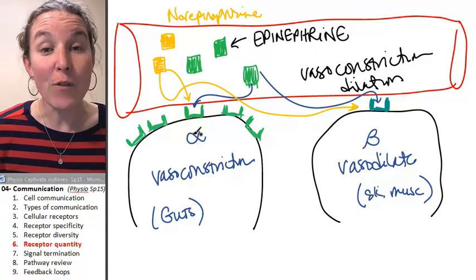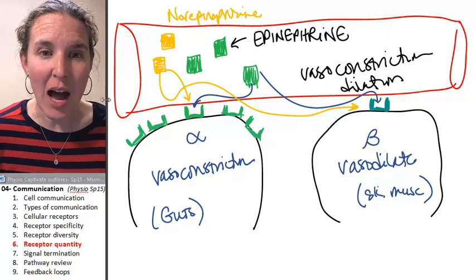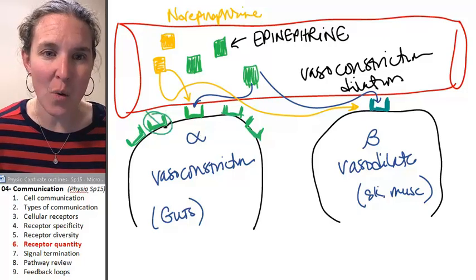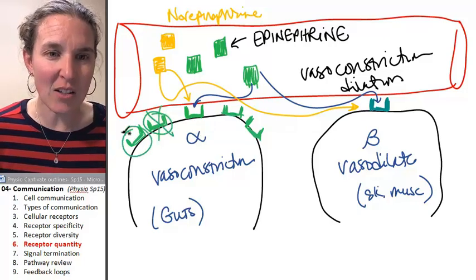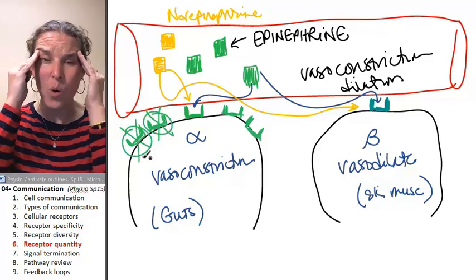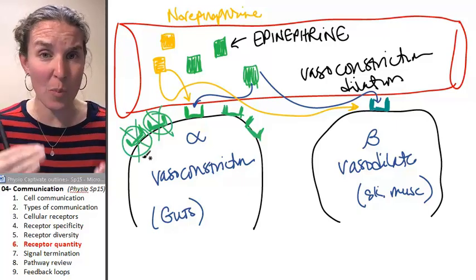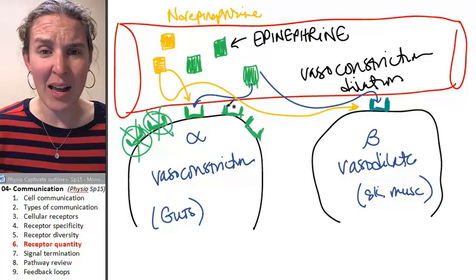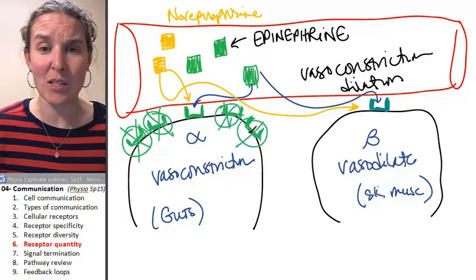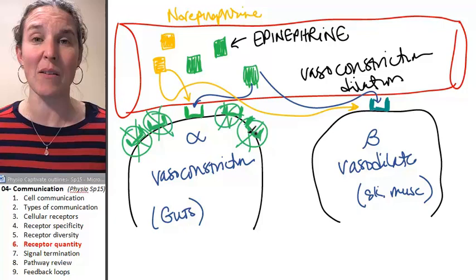If you have too much, I could actually make these guys go away. The cell could say, whoa, I'm getting totally overstimulated with dopamine right now, and so I definitely don't need that many receptors because where did all this dopamine come from?